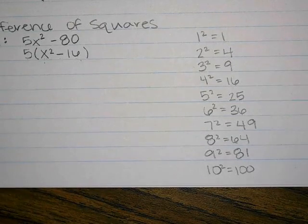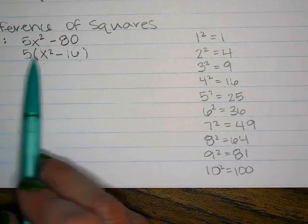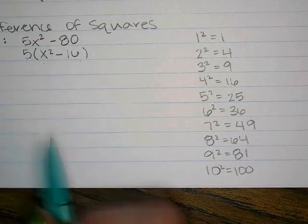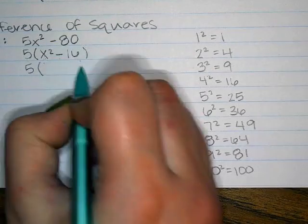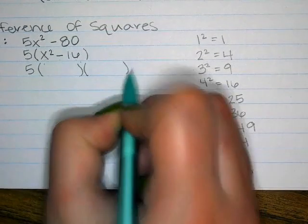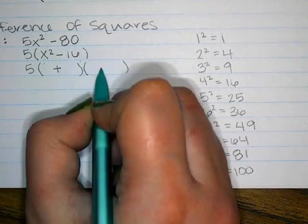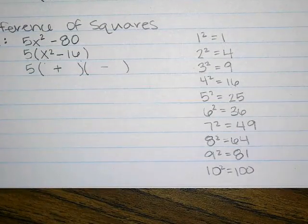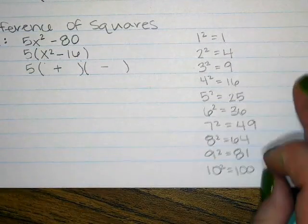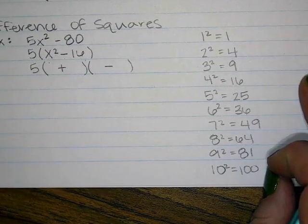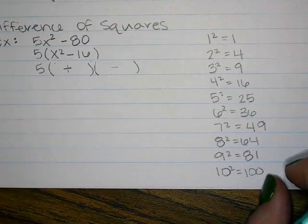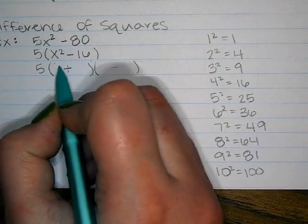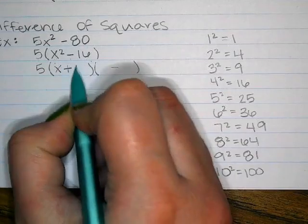When you factor difference of squares, you get two sets of parentheses — one with a plus and one with a minus. So x squared minus 16 factors to (x + 4)(x minus 4). With the GCF pulled out earlier, the full answer is 5(x + 4)(x minus 4).